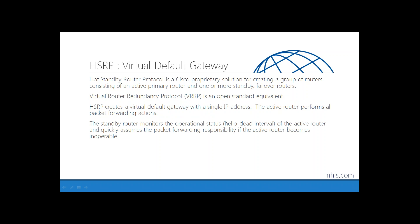Our solution is called HSRP — Hot Standby Router Protocol. HSRP is a Cisco proprietary protocol for creating a group of routers consisting of an active primary router that is actively forwarding, and one or more standby or failover routers that are there in case the primary fails. There is an open standard equivalent called VRRP — Virtual Router Redundancy Protocol — which is very equivalent to HSRP and suitable for multi-vendor environments.